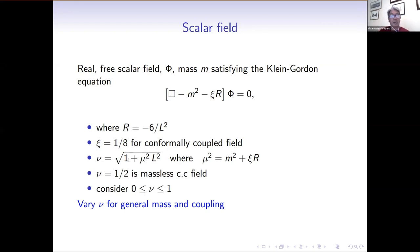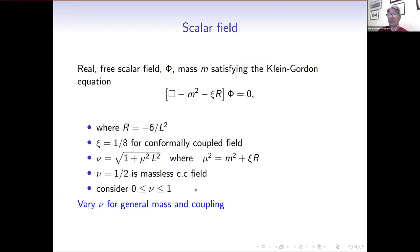We also define another term, nu, given as the square root of 1 plus mu squared L squared, where mu squared essentially involves the mass and the coupling constant and the Ricci scalar. The reason for doing this is that whilst a lot of studies have looked at the massless conformally coupled field where nu is one half, we will be able to look at the field with general mass and coupling by looking at different values of nu between zero and one.